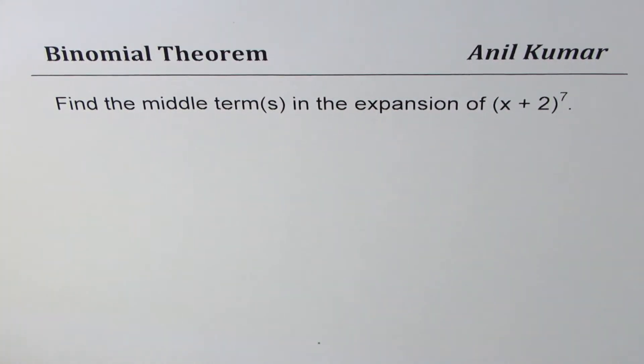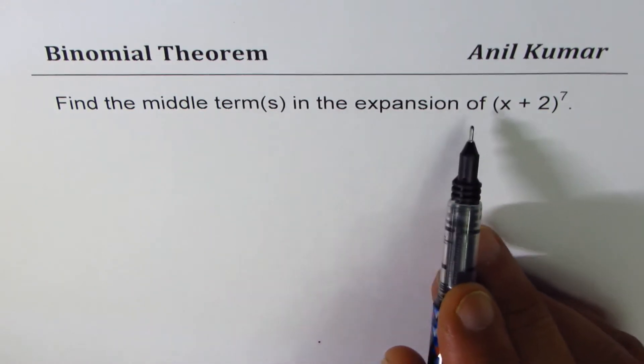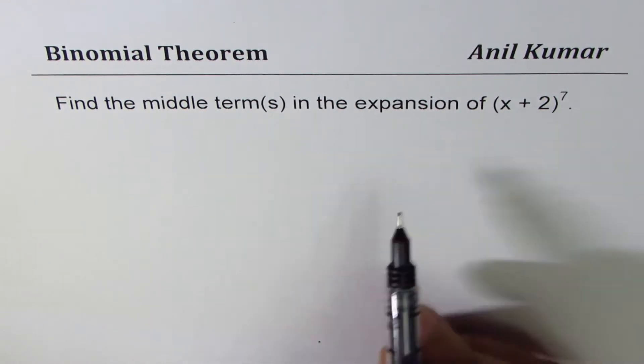I'm Anil Kumar and in this video we'll try to find how to get the middle terms of binomial expansion when the exponent is odd. The question here is find the middle terms in the expansion of (x + 2)^7.